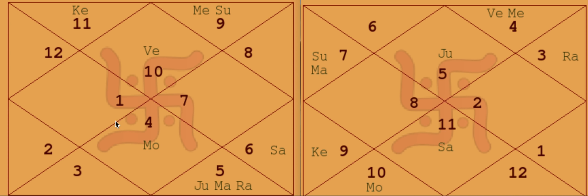In the Lagna chart we see the tenth lord and fifth lord Venus, which is the Yogkarak, is in the ascendant. This is a fantastic placement — the Yogkarak in the ascendant. Yogkarak means one who rules a Trine and a Kendra simultaneously, so Venus rules the fifth and the tenth. Wherever the Yogkarak is sitting, if he is well placed he will always do good for that house, otherwise it can also do bad.